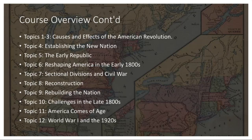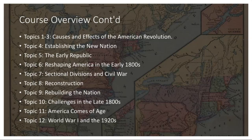Challenges in the late 1800s also included economic instability and the rise of corporate monopolies. Progressives aimed to address these issues, focusing on social justice, political reform, and economic regulations. Figures like Jane Addams and Ida B. Wells worked towards women's suffrage and racial equality, while the 19th Amendment finally granted women the right to vote in 1920.